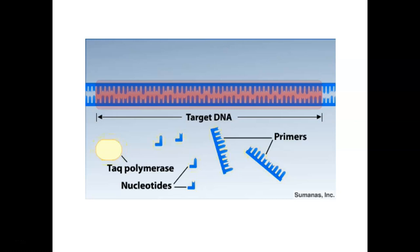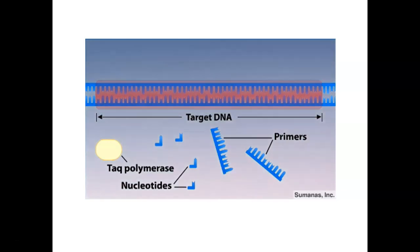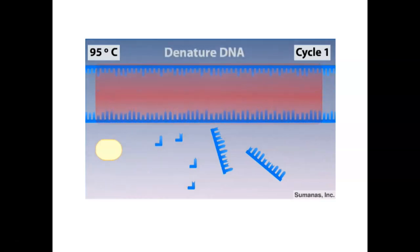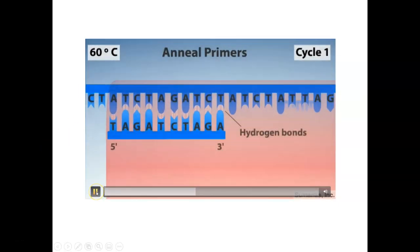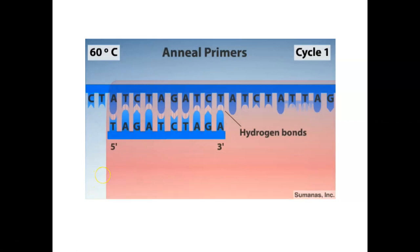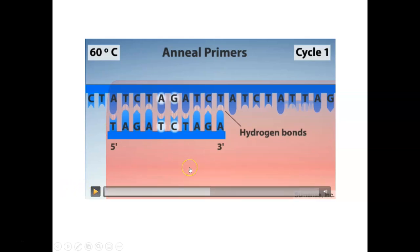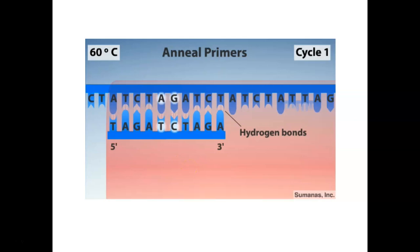A PCR reaction lasts several hours and typically consists of 20 to 35 repeating cycles. A cycle begins by heating the reaction mixture to 95 degrees Celsius, which denatures the DNA — breaking the hydrogen bonds that hold the strands together. After denaturing, the temperature is reduced to around 60 degrees so that the primers can form hydrogen bonds, or anneal, with their complementary sequences in the target DNA. The primers follow base pairing rules: adenine pairs with thymine, and cytosine pairs with guanine. We've got two primers here: this forward primer binding to the top strand going 5' to 3' inward, and a reverse primer that bound to the other strand.